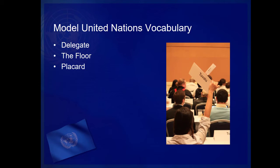Next is placard. This is the piece of cardboard or paper that has your country's name printed on it. You'll raise your placard to vote or to be recognized by the chair to make a motion. The photo here, for example, shows the delegate from Tuvalu raising her placard in order to be recognized by the chair.